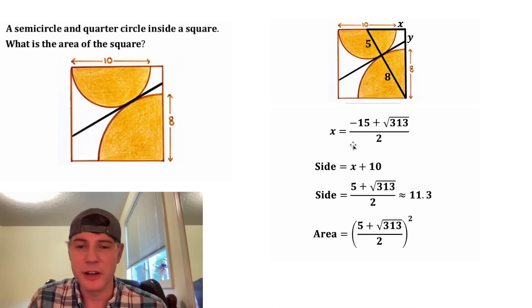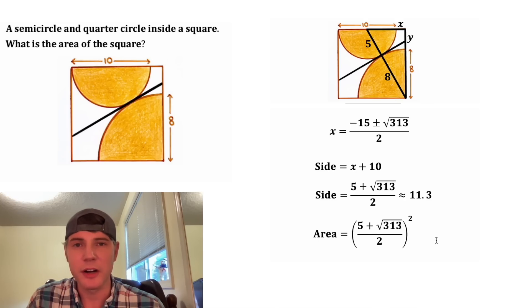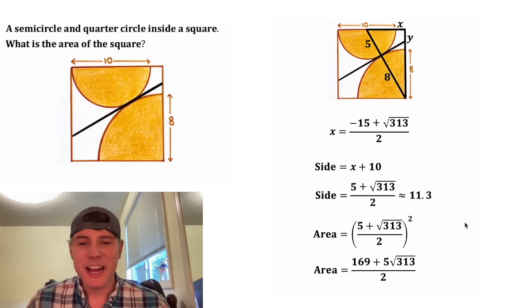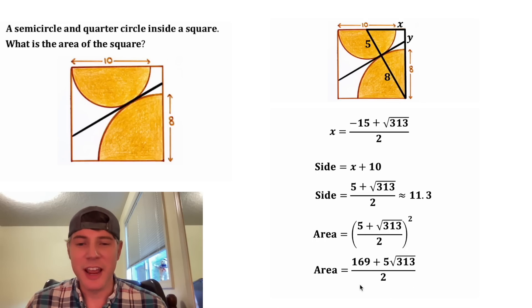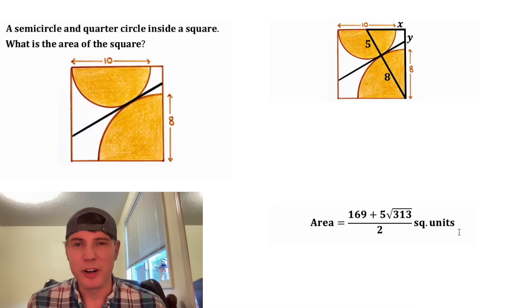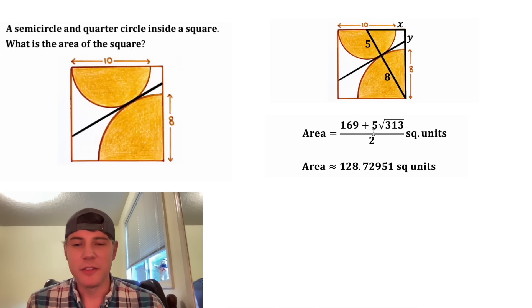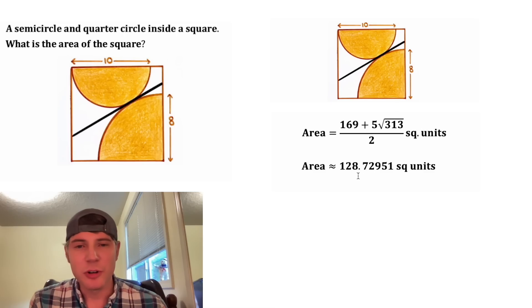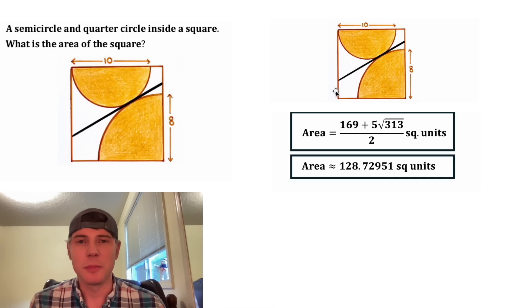And now we're ready for our question. The area of this square is going to be this side length squared. Multiplying it out gives us an exact value of 169 plus 5 times the square root of 313, everything over 2 square units. The approximate value of this is 128.72951. This is the answer to our question — this is the area of the square. Let's put a box around it. How exciting!